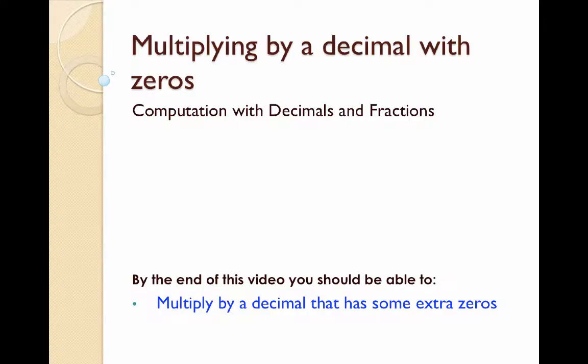Hi, in this video that's a follow-up to multiplying by a decimal, we're going to take a look at multiplying decimals that have extra zeros in them. By the end of this video, you should know what to do when you're multiplying a decimal that might have a couple of extra zeros on the end of their numbers.